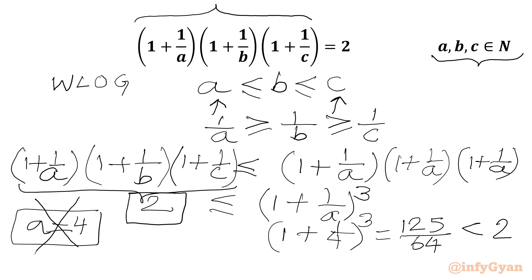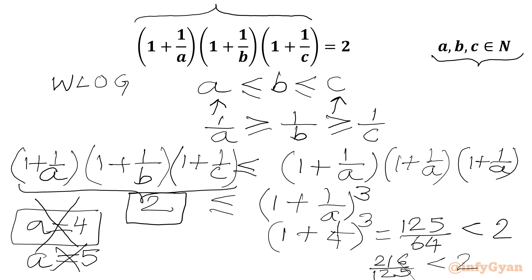Let us also check A = 5. Then (1 + 1/5)³ = (6/5)³ = 216/125, which is again less than 2. So A is restricted; A may only be 1, 2, or 3.